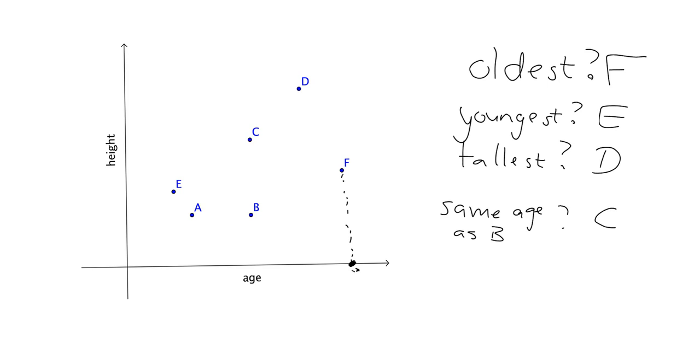And you'd see, where would you read off their age? Well, B, you'd come down here and read off whatever value it is. And C, you'd also come all the way down and be reading off exactly the same value for the age.